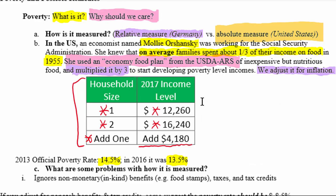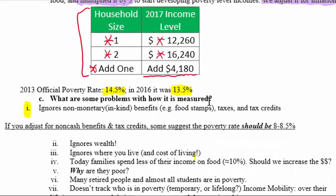What are some problems with how poverty is measured? Number one, the way we measure poverty is based on cash income. This ignores a lot of non-monetary, or in-kind, benefits that people receive. For example, food stamps — now called SNAP — are not cash, but a card you can use to buy food at a grocery store. Since it's not cash, it's not counted as part of these income figures. A family might have very close to the poverty limit in cash income, but extra benefits technically bring them out of poverty, yet the way we measure it does not account for this.